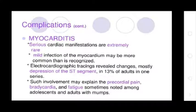Myocarditis: Serious complications of cardiac manifestation are extremely rare. Infection of the myocardium may be more common than recognized. Electrocardiographic changes, mostly differences in the ST segment, have been found in 30% of adults in one series. Such involvement may explain the precordial pain, bradycardia, and fatigue sometimes noted among adolescents and adults with mumps.